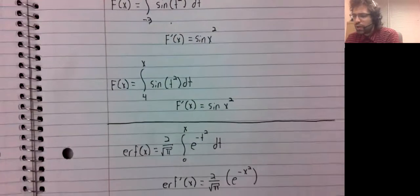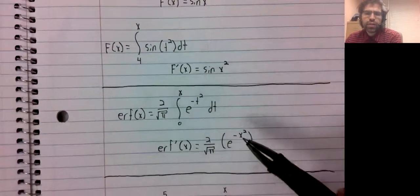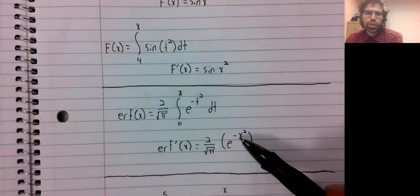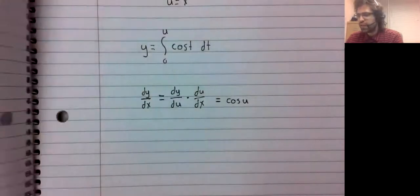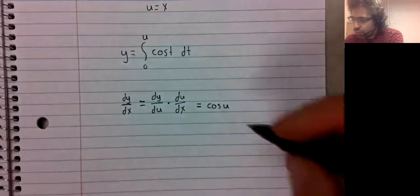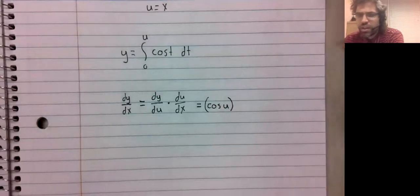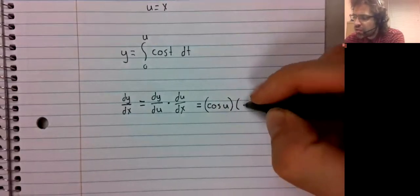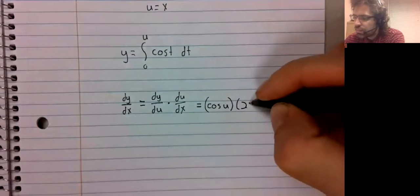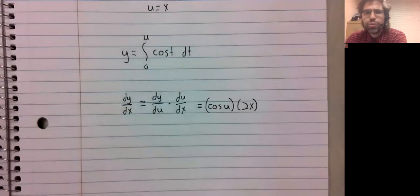Looking back at previous examples, whatever variable we have up here is the variable that shows up in the derivative. So the cosine of u, and then du dx is 2x.